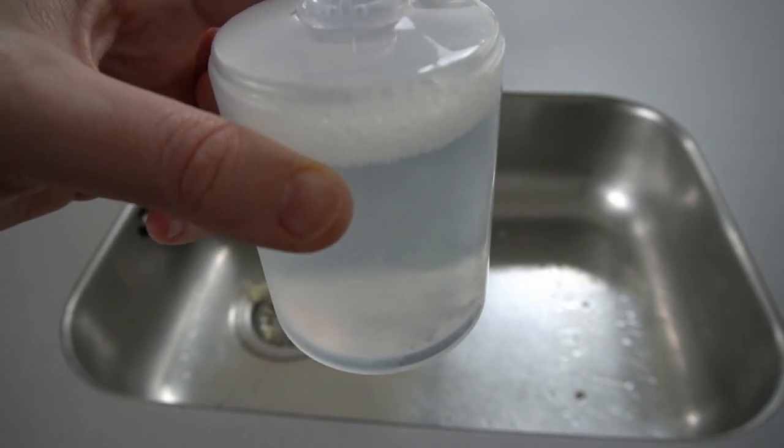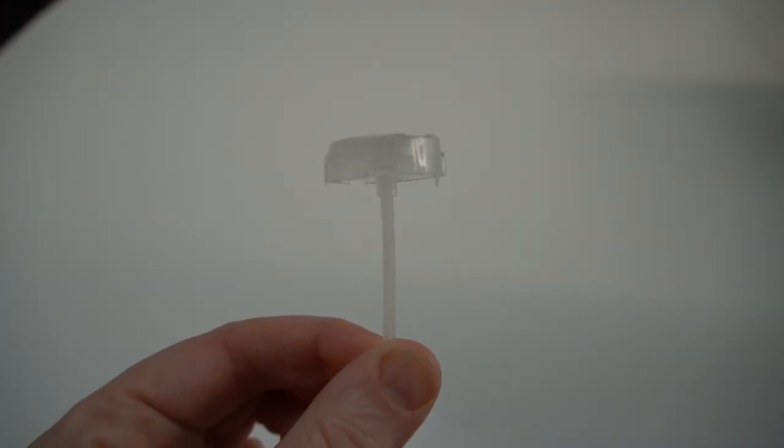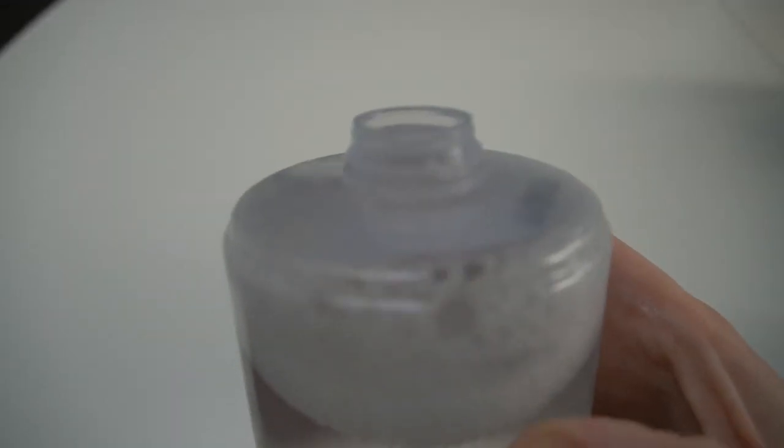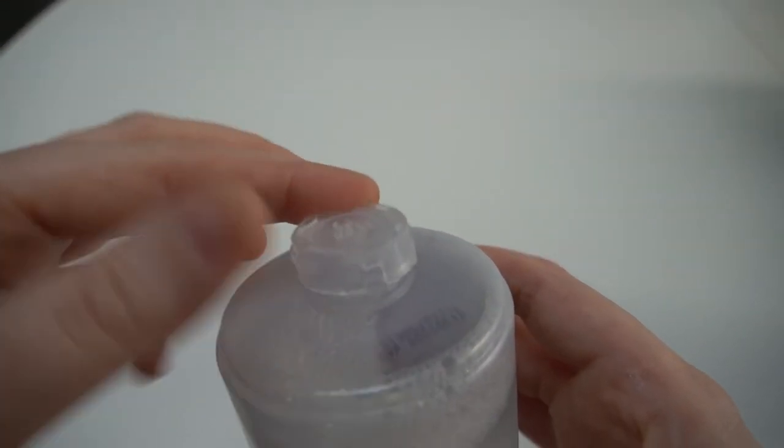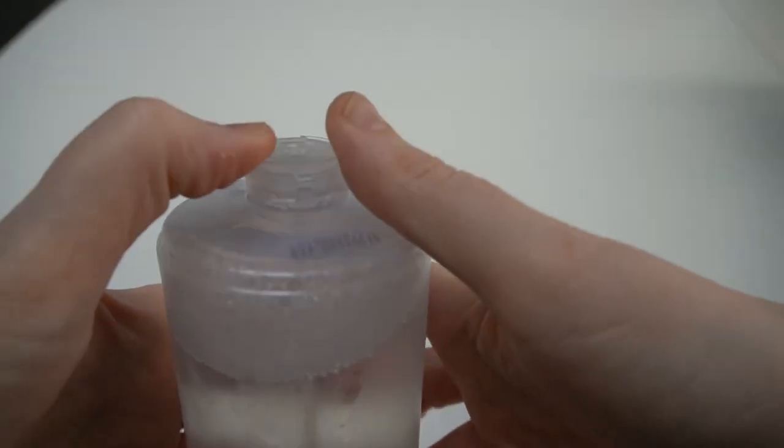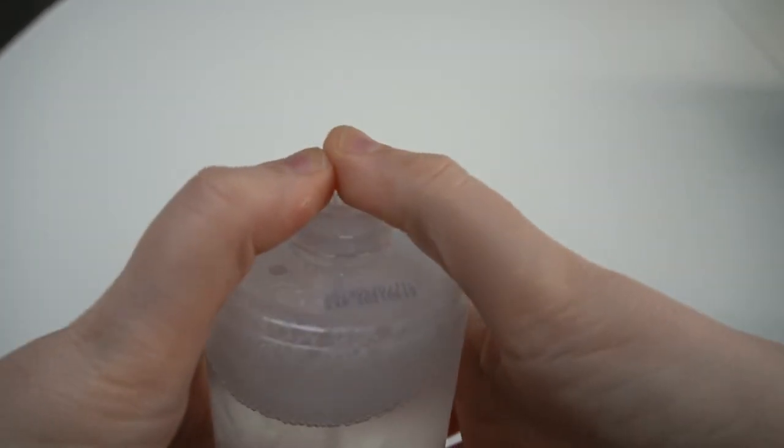To do this, we need to align the small gap you see here on the plastic piece with the plastic tab on the container. So align those two and then apply pressure. You should hear a small click once it's in place.